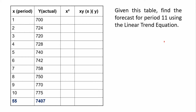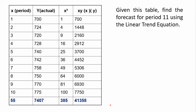Let us have a sample problem. First, we have to tabulate our data like this. The given data in column x is the number of weeks, and y is the actual data for weekly demand. We want to forecast demand for period 11 using the linear trend equation. We add two more data columns: x squared and the xy column. We get the data for the x squared column by squaring the data from the x column, and we get the data for the xy column by multiplying the data from the x column with the data on the y column.